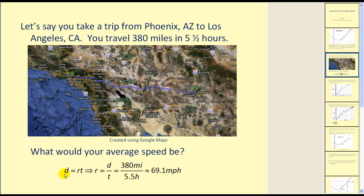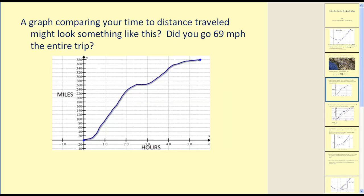We know that distance is equal to rate times time. If we solve this equation for r, we would have r equals d divided by t. Therefore, we would have 380 miles divided by 5.5 hours, giving us an average speed of approximately 69.1 miles per hour. A graph comparing your time to distance traveled might look something like this.